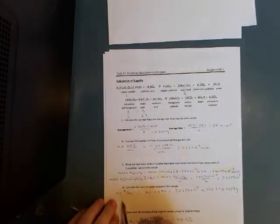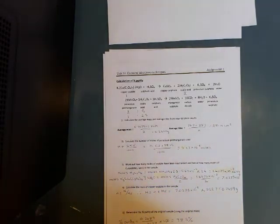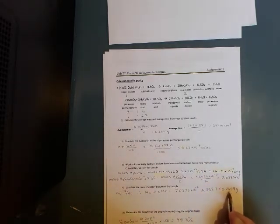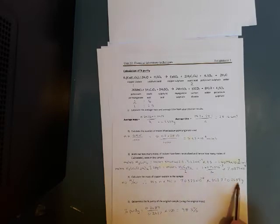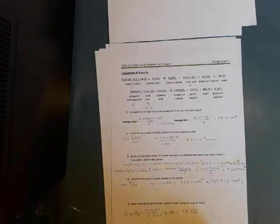Mass of copper oxalate. We're going to use N equals M over MR. Therefore M equals N times MR. So 7.0375 times 10 to the minus 4 times by 353.7. That's the MR of copper oxalate. Gives us 0.2489 grams. Purity 0.2489 grams that we calculated in number 4, divided by the average mass 0.2527 times 100, gives us 98.5% purity. That's a high percentage purity.